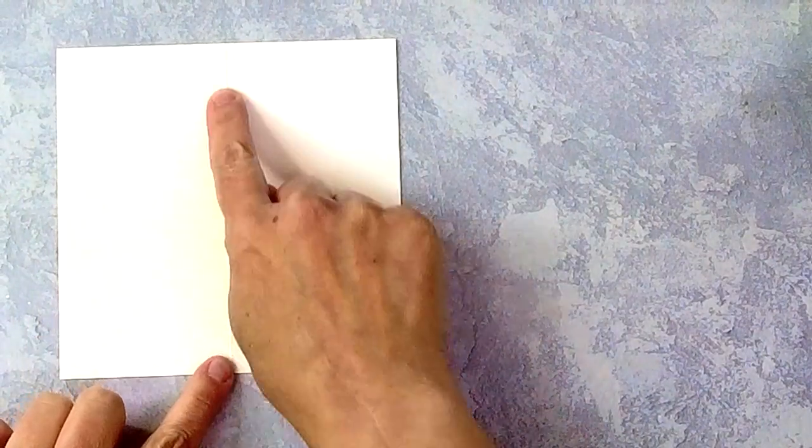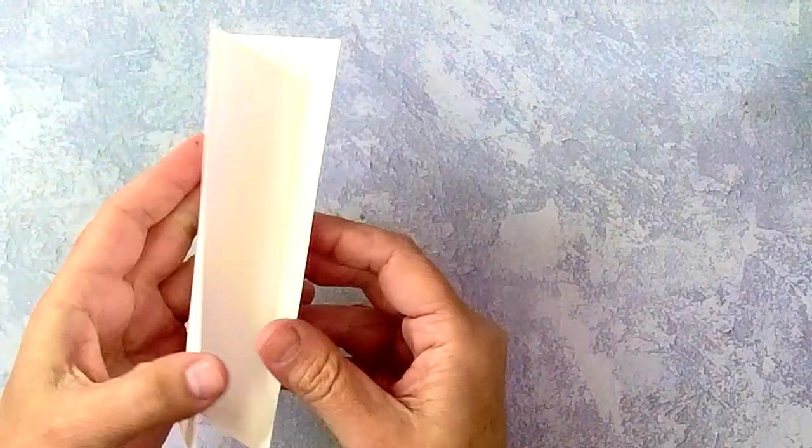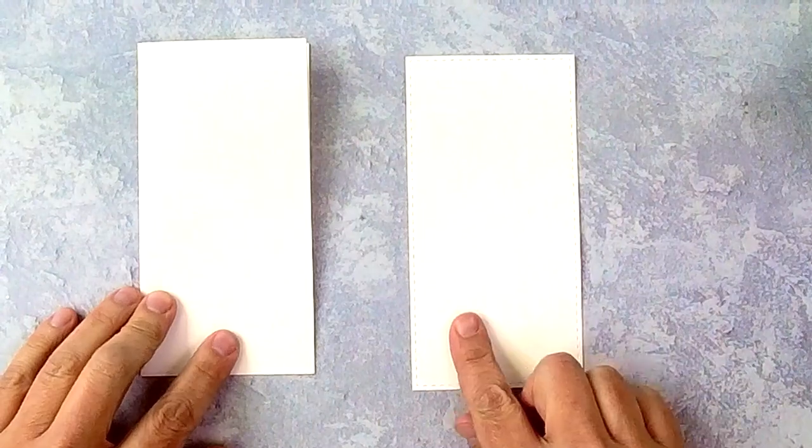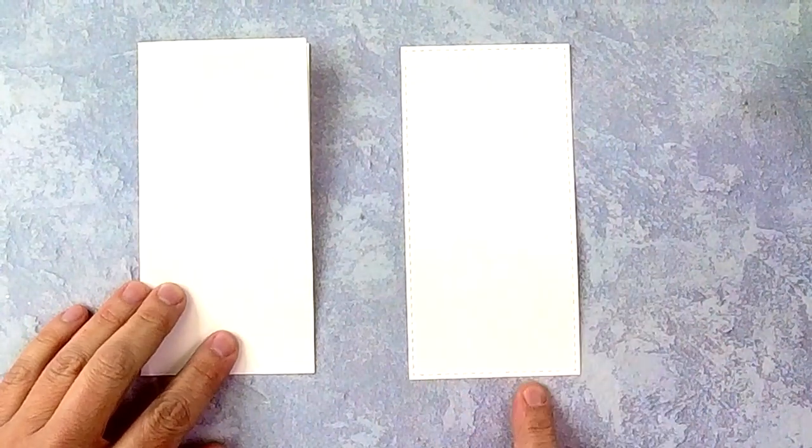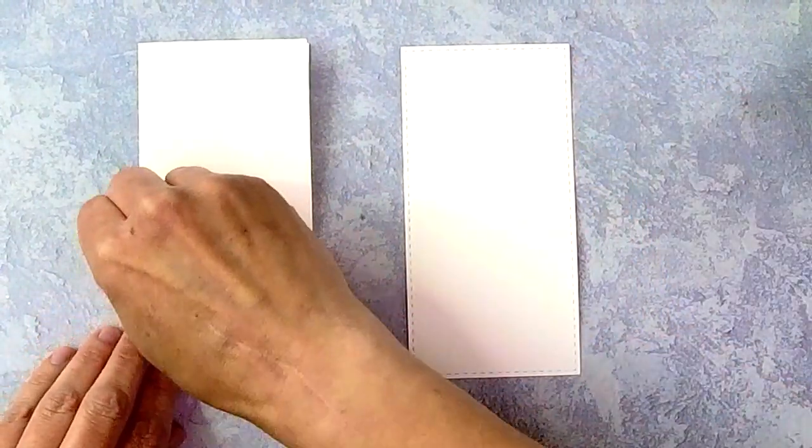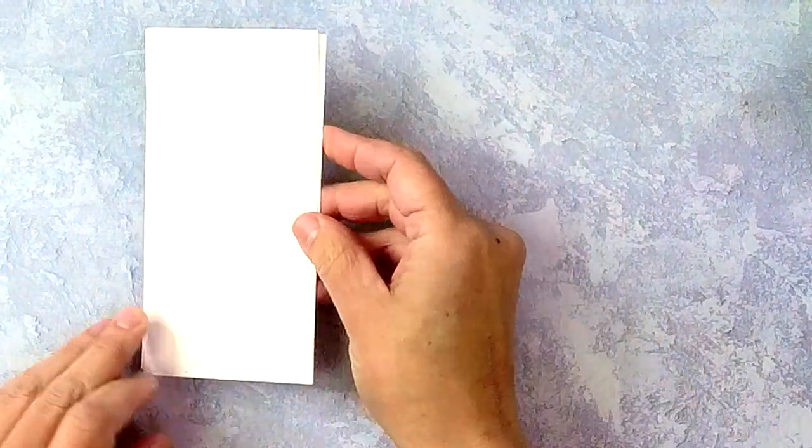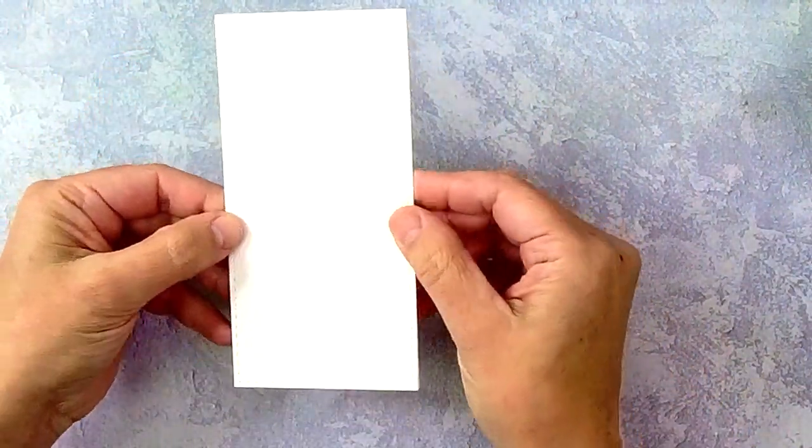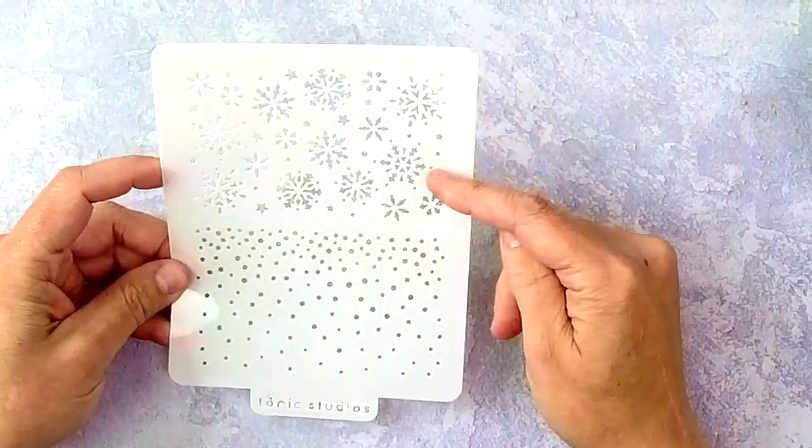Now I want to show you the measurements for the mini slimline cards, so you're going to go 6x6 for the card base and then score it at 3 inches. So 6x6, score it down the center, and then if you want a top piece, it's going to be 3x6, and that will easily go on top to give you a perfect mini slimline card to fit inside your mini slimline envelopes.